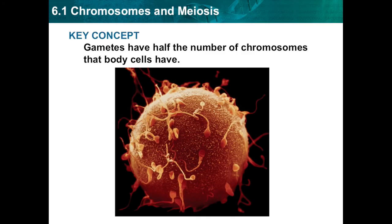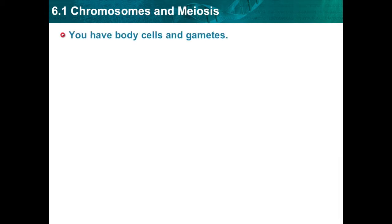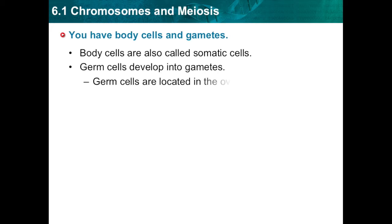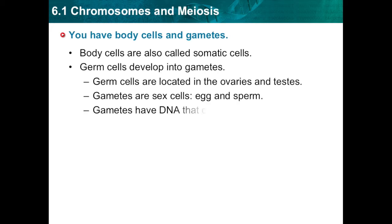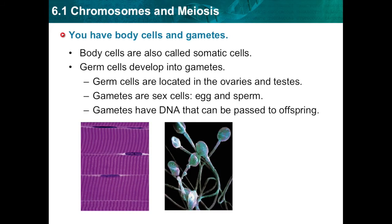Good morning guys, today we're going to talk about section 6.1 in your textbook, Chromosomes and Meiosis. You have body cells and gametes. All of the different cells in your body can be divided into two groups: somatic cells and germ cells.